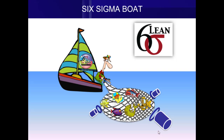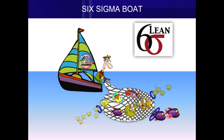Now every time I show this example to executives, most of the time they tell me: Rex, why not focus on getting more sales? Because process defects, process delays, and variations are always present — all organizations have that. Why not focus on getting more sales? Like in your example, cast a bigger net so you get more fish, you get more revenue.